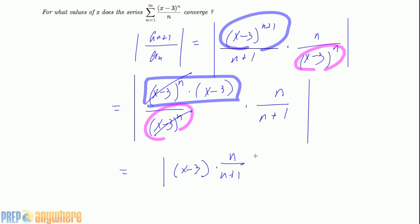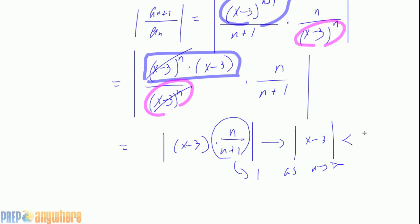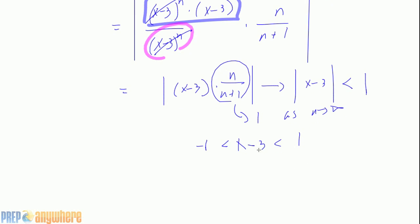So what we have is |x minus 3| times n over n+1. That approaches |x minus 3| as n approaches infinity, since n over n+1 approaches 1. For the ratio test, this must be less than 1 to converge, so |x minus 3| < 1, which means x is between 2 and 4.